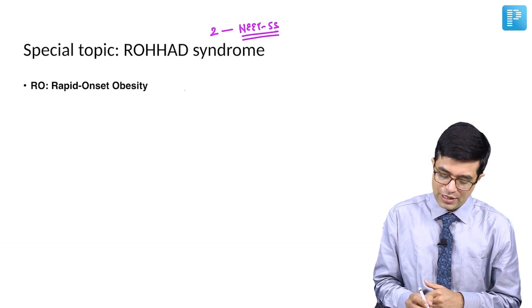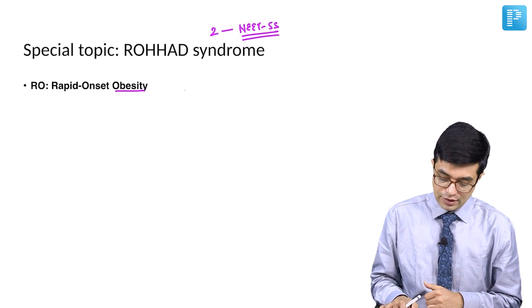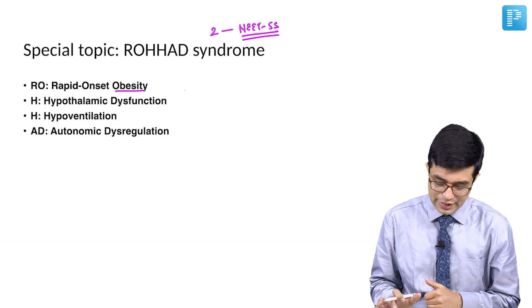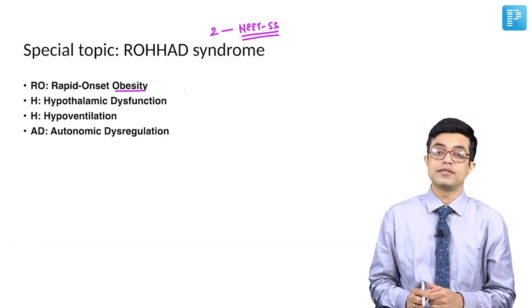RO stands for rapid onset obesity, H stands for hypothalamic dysfunction, next H stands for hypoventilation, and AD stands for autonomic dysregulation.